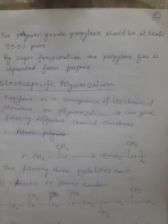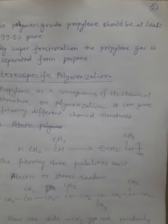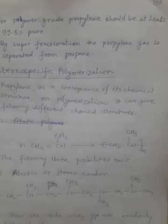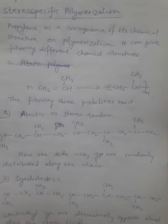For polymer grade polypropylene, the propylene gas should be at least 99.5% pure. By superfractionation, the propylene gas is separated from propane and other mixtures. In stereospecific polymerization, n number of propylene molecules undergo addition polymerization to result in a long chain polymer. Three possible structures can be formed: the first is the atactic or stereo-random polymer, where the methyl groups are randomly arranged along the main backbone chain of CH-CH₂.